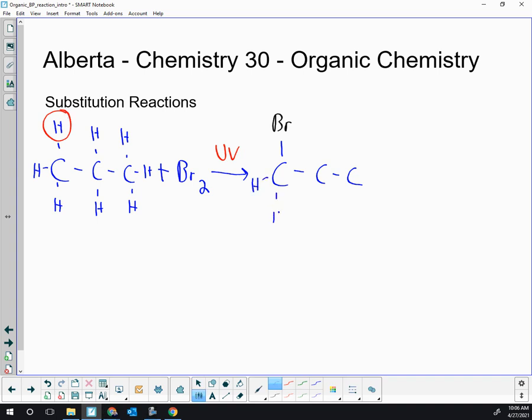Once that substitution is carried out, we have that leftover H from our organic product and we have a leftover Br that's going to combine with the H. So we're going to get hydrogen bromide and we get a 1-bromopropane.